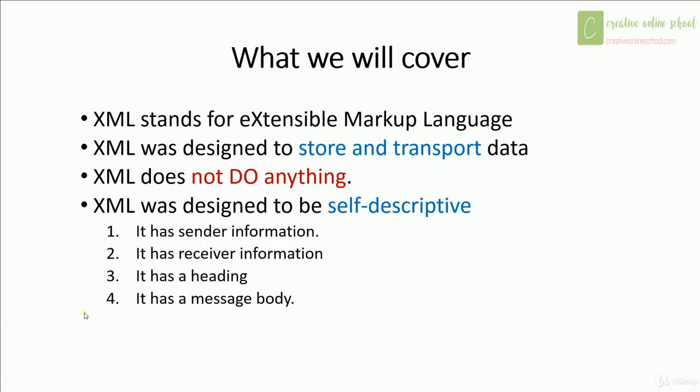First, a bit of an explanation. XML stands for Extensible Markup Language and XML was designed to store and transport data. Basically it's designed to be a simple, easy way to send and retrieve data so that you know exactly what you're getting. XML itself does not actually do anything — it's just a format that you can send or retrieve your data in. XML was designed to be self-descriptive, which means that when you get it you should be able to determine everything you need to know about the message.